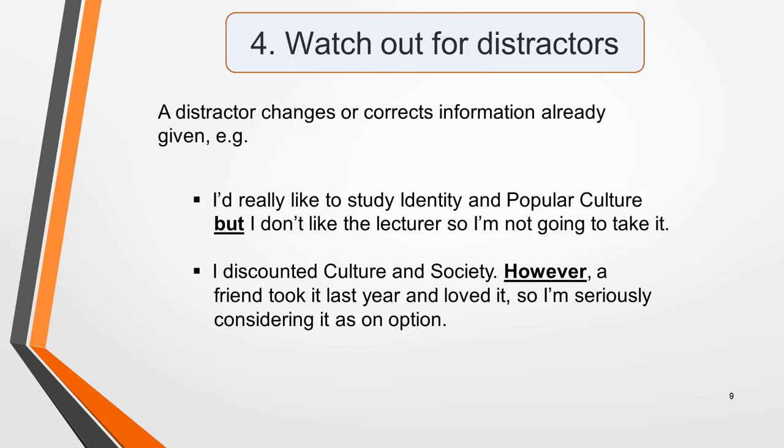You'll also need to watch out for distractors. The examiners will try and catch you out with these. A distractor is a word or phrase that changes or corrects the original piece of information given. So you may be given an answer and then have it taken away again. Here are a couple of sample sentences containing distractors. I've highlighted the relevant words. I'd really like to study identity and popular culture, but I don't like the lecturer, so I'm not going to take it.